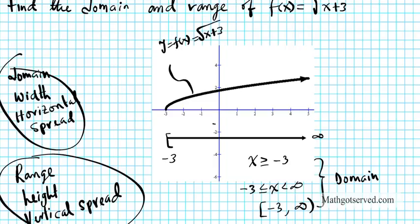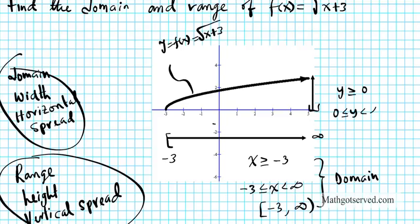The range is the vertical spread of the graph. The graph goes as low as the x-axis and then upwards from there — it goes up forever because this graph has an increasing positive slope. We can depict that as y is greater than or equal to 0, or equivalently 0 ≤ y < ∞, or using interval notation [0, ∞). These are all different ways to express the range.